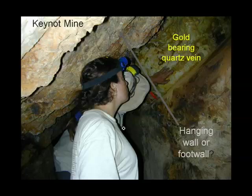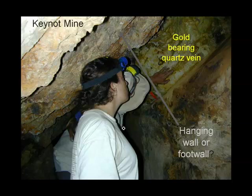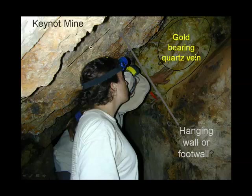For a specific example, here are friends of mine at the Keynot Mine, an abandoned gold mine in the Inyo Mountains. One of my friends has her hand on the quartz vein here — I wish all that yellow stuff was gold, but if it were, this would not be an abandoned mine. Hanging above her head is the hanging wall, and below is the foot wall.